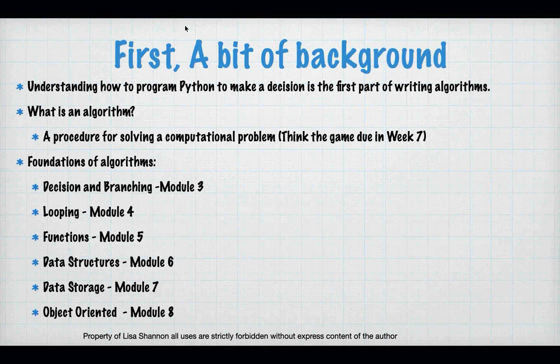So what are we talking about tonight? We're talking about decision-making, plain and simple. The first part of creating an algorithm is understanding how to get a computer to answer a question, and that's what all of this if, elif, else stuff we're talking about this week is about - getting the computer to answer a question and make decisions.